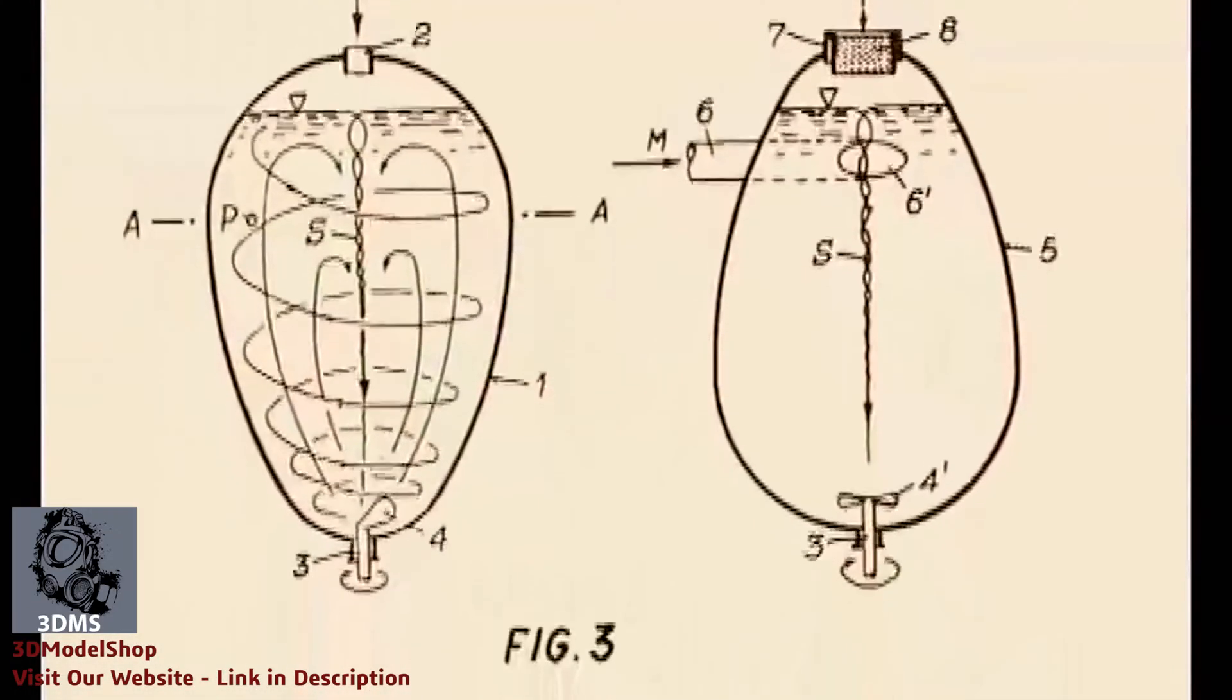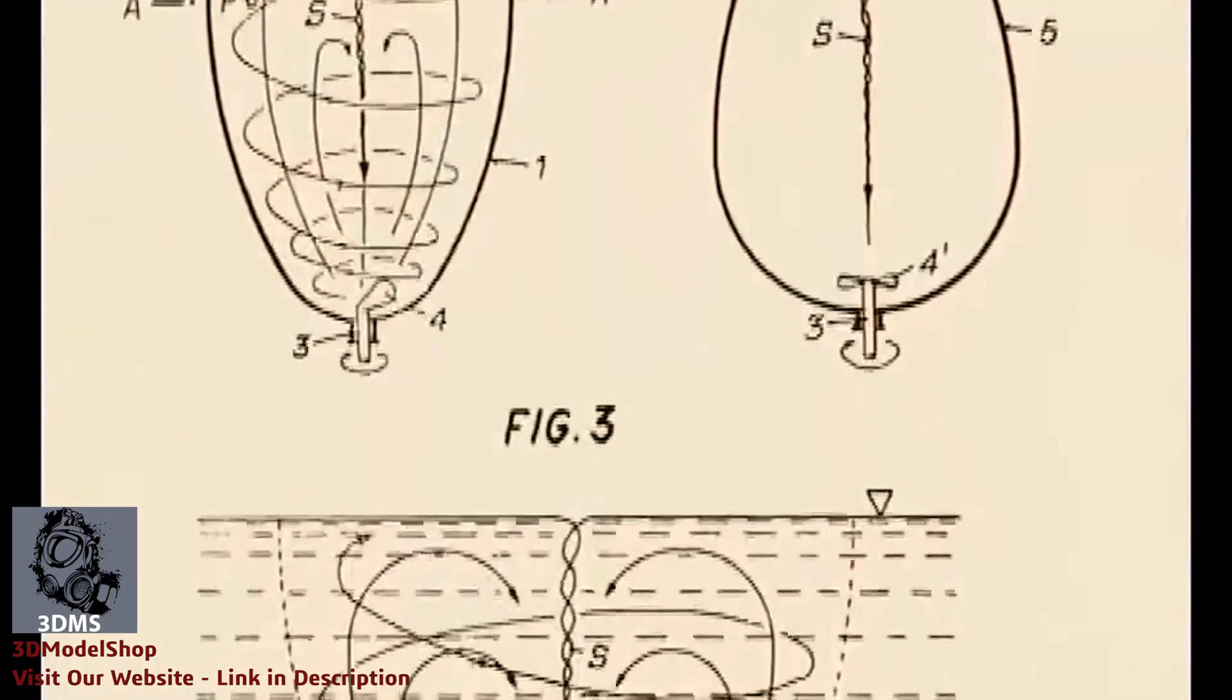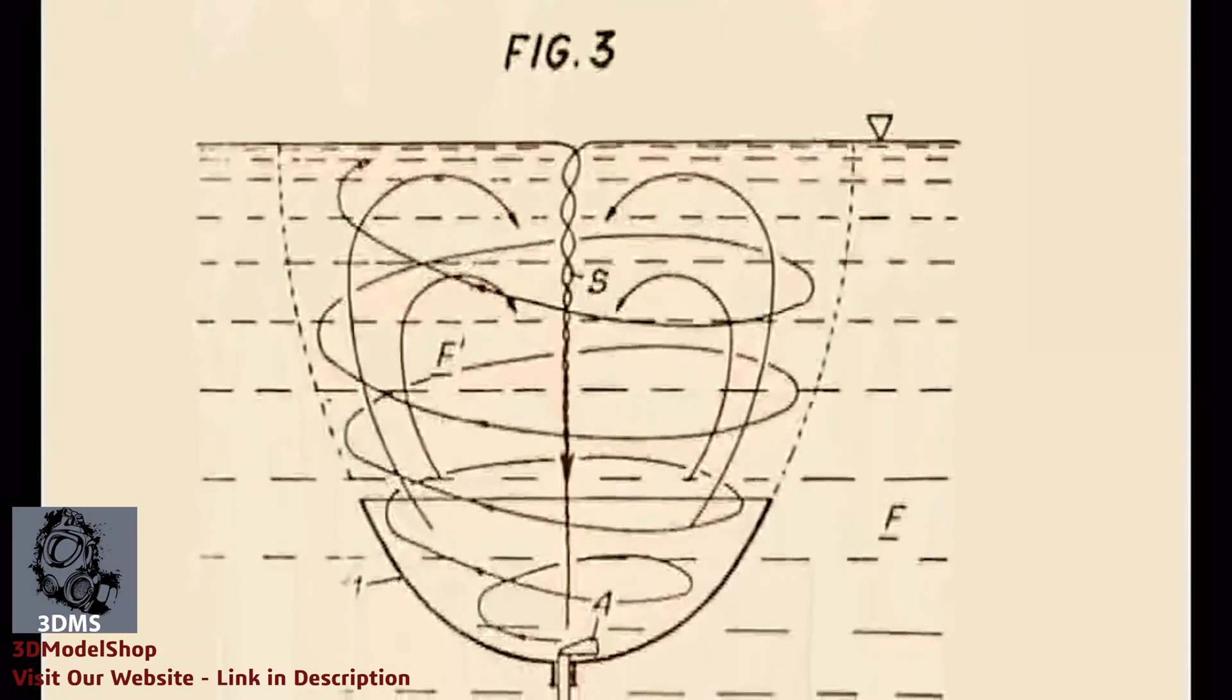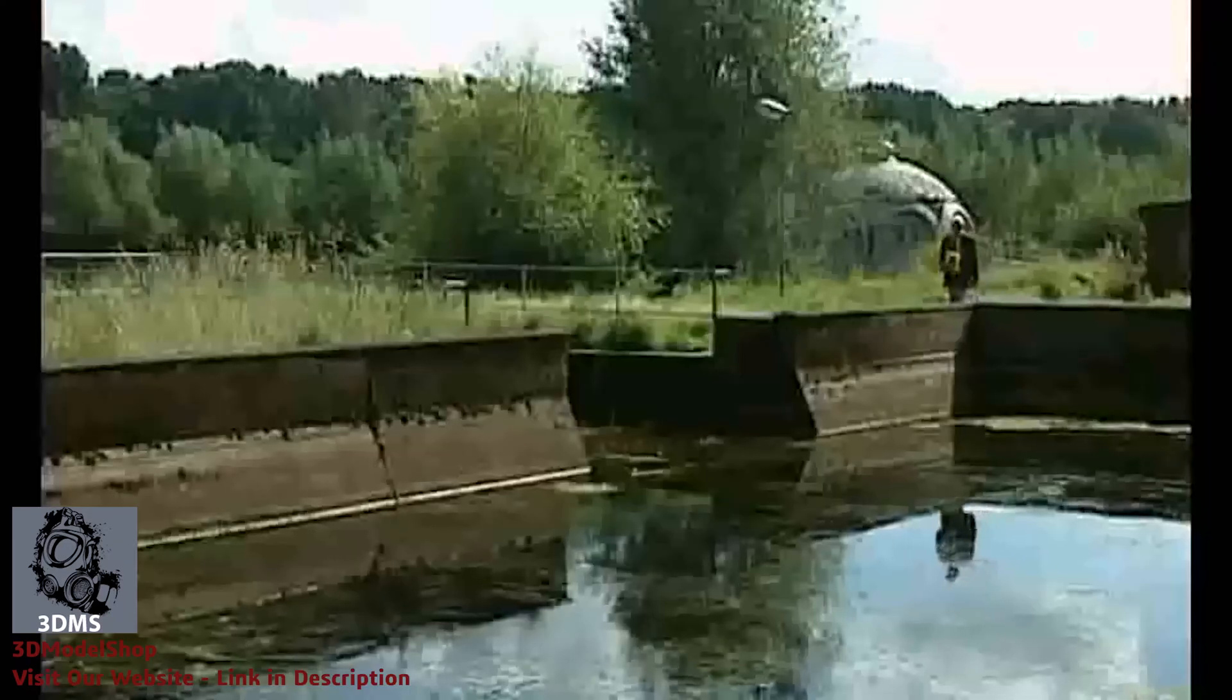Walter Schauberger received many patents for spiraling treatment systems for fluid and gaseous media. One such machine was used at the Hamburg Water Works in 1967.